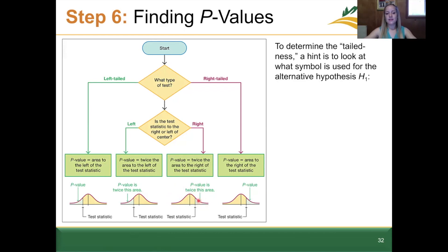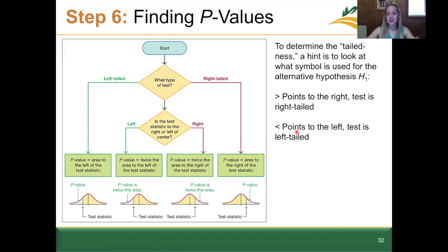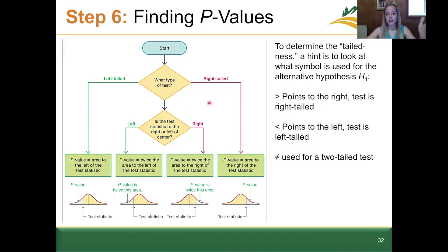Here's a hint for deciding if it's left-tailed, right-tailed, or two-tailed: when we look at the alternative hypothesis, if we have a greater-than symbol, it points to the right, so the test is right-tailed. If we have a less-than symbol, it points to the left, so the test is left-tailed. Think about it however makes sense to you. If we have a not-equal-to symbol, we use that for a two-tailed test.